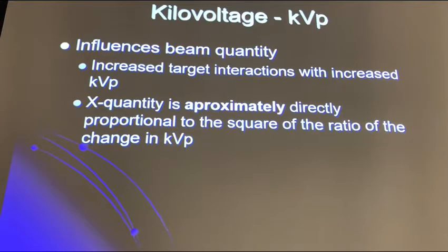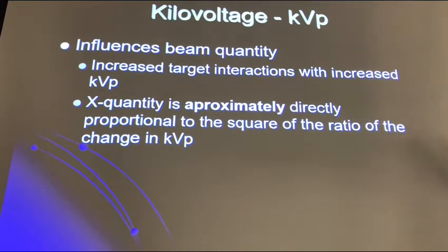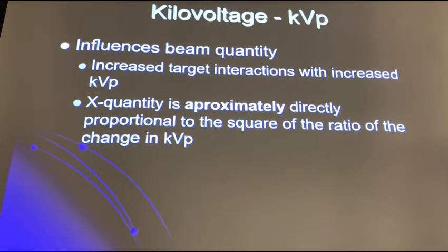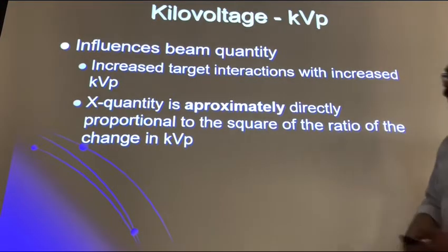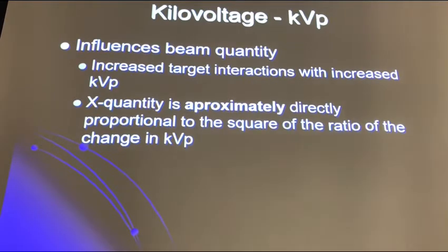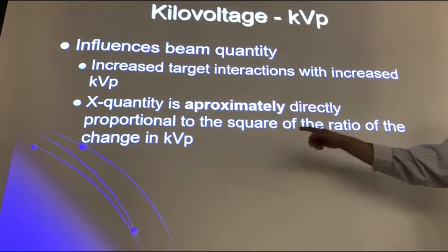KVP will influence beam quantity. Increased target interaction will increase with higher KVP because the electrons flowing from cathode to anode have more energy — they can bounce from atom to atom. On average there are about a thousand interactions; increase that energy and you get more than a thousand, producing more photons. X-ray quantity is approximately directly proportional to the square of the ratio of the change in KVP.